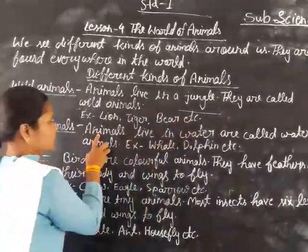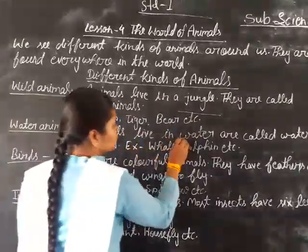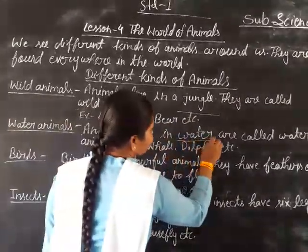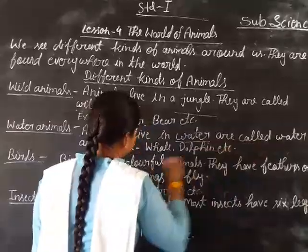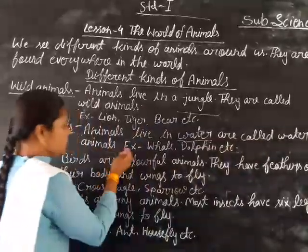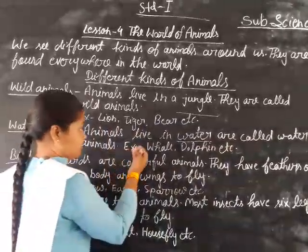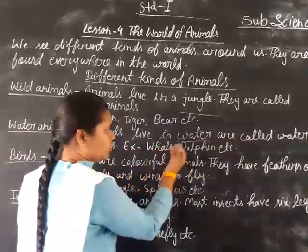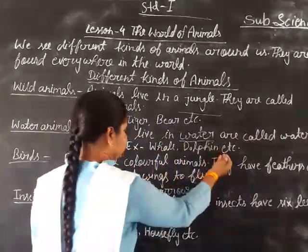Water animals — animals that live in water — are called water animals. For example, whale, dolphin, etc.